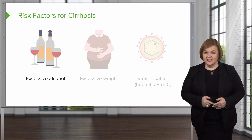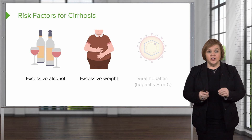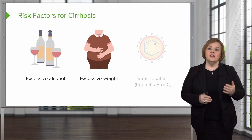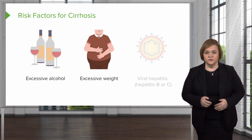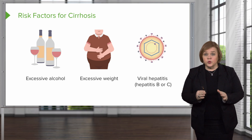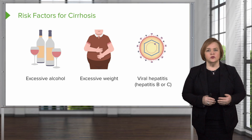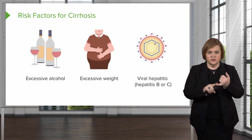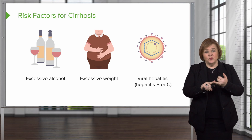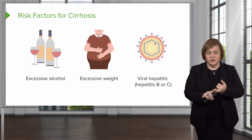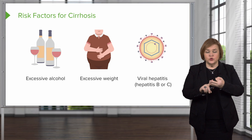The next risk category in the United States is excessive weight, which puts the patient at risk for non-alcoholic fatty liver disease, and that can turn into cirrhosis. Another common factor is viral hepatitis. Not everyone with chronic hepatitis will develop cirrhosis, but it is one of the world's leading causes of liver disease. So the three major categories are: excessive alcohol, excessive weight leading to non-alcoholic fatty liver disease, and chronic hepatitis.